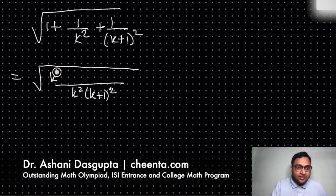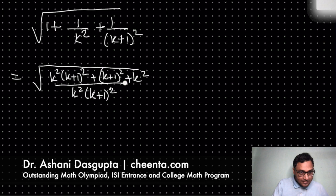So we have k squared (k+1) squared plus (k+1) squared plus k squared.